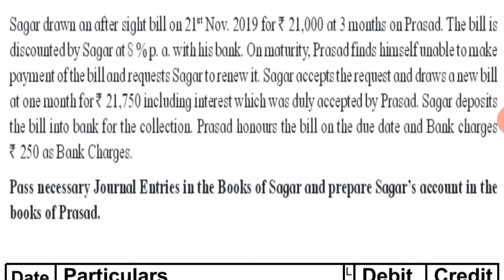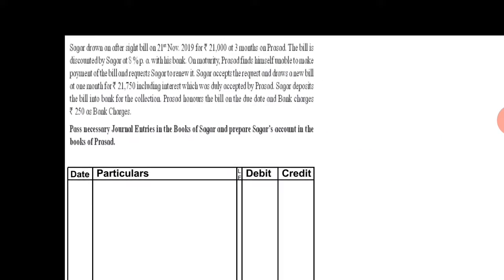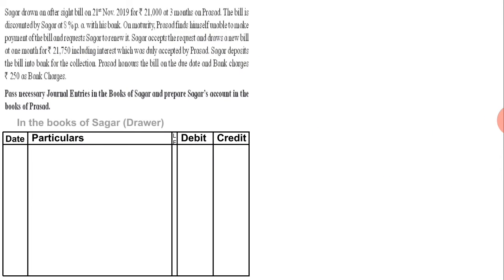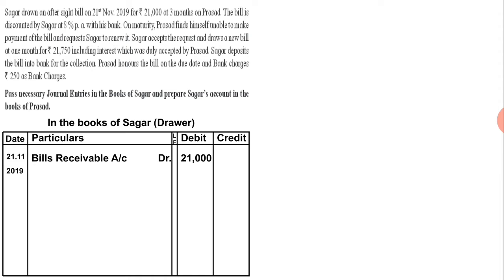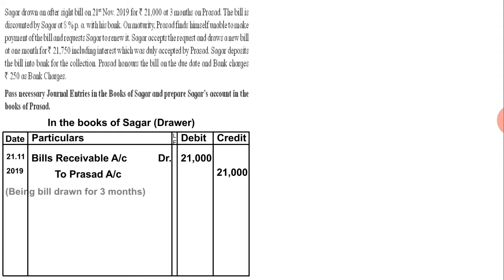As per the situation, Sagar drew a bill on Prasad for 3 months. First, we pass the bill draw entry. Normally, the entry is Bills Receivable Account debit to Drawee. In the books of drawer Sagar, on 21st November 2019: Bills Receivable Account debit to Prasad Account ₹21,000 — being bill drawn for three months.